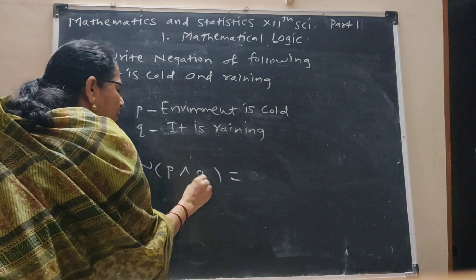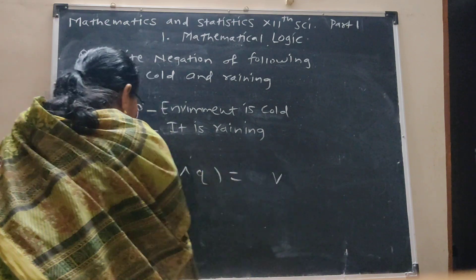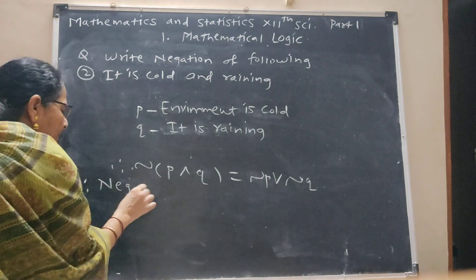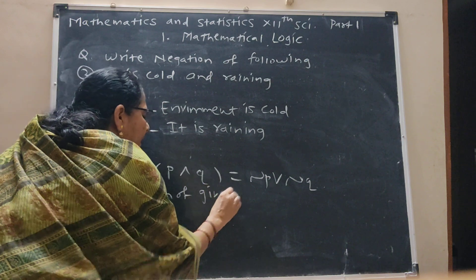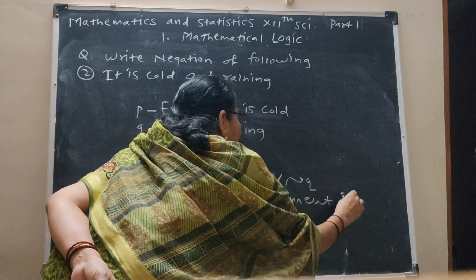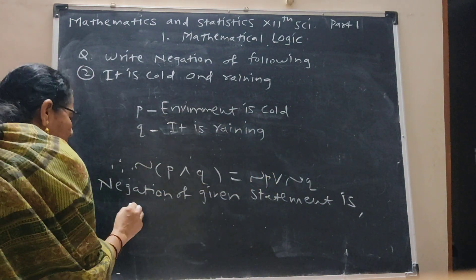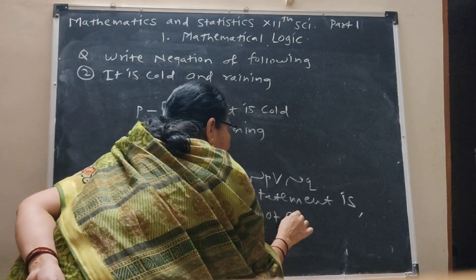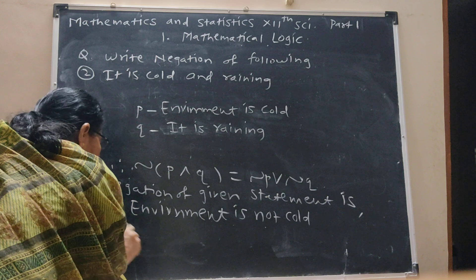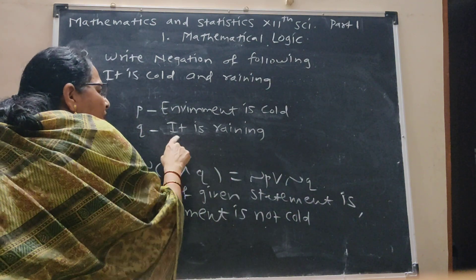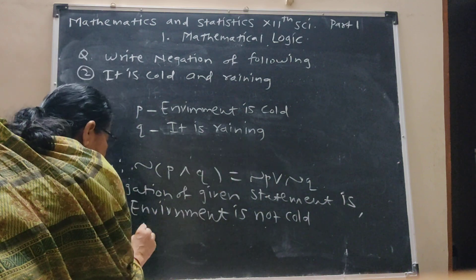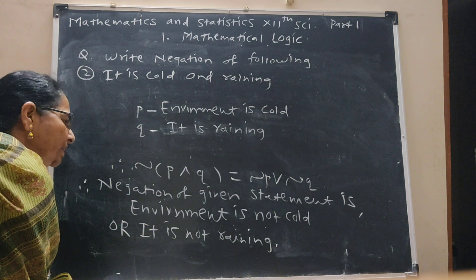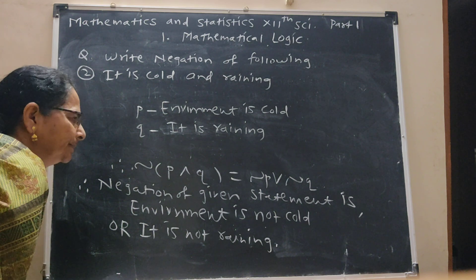The formula for negation of (P and Q) is: negation P or negation Q. Therefore, the negation of the statement is: negation P — 'the environment is not cold' — or negation Q — 'it is not raining'.